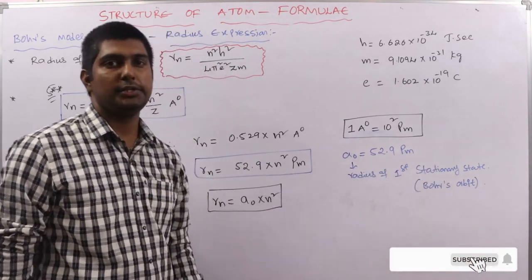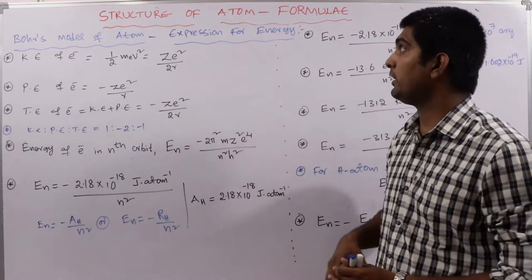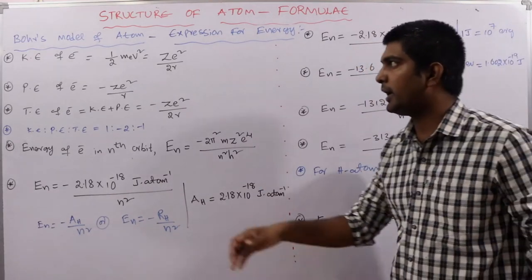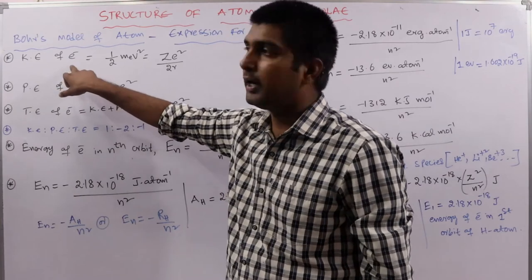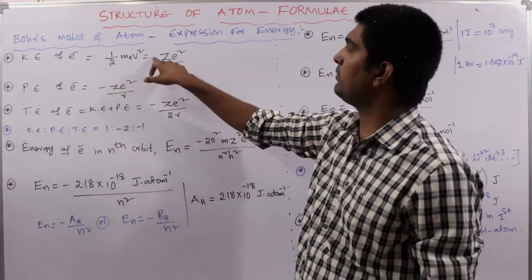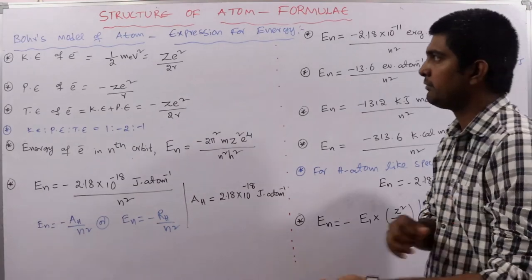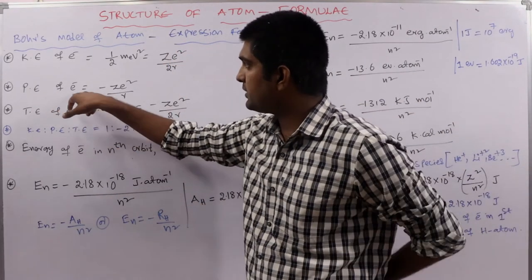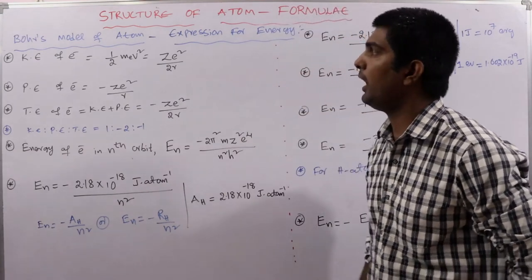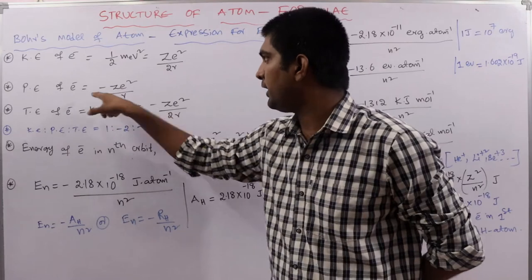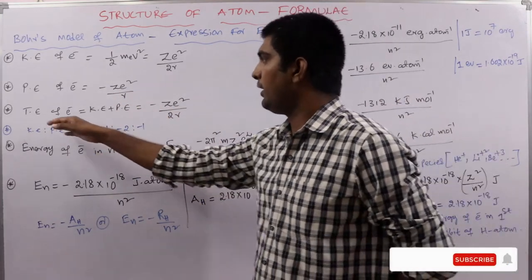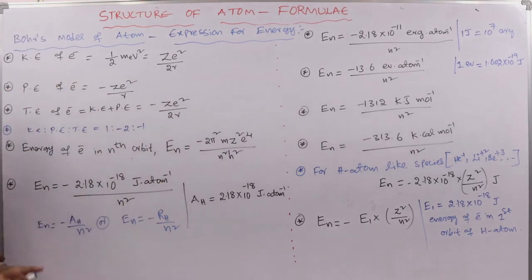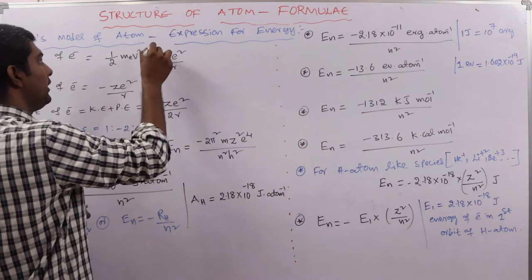For energy expressions in Bohr's model: kinetic energy of the electron = ½mev² = Ze²/2r; potential energy = −Ze²/r; total energy = KE + PE = −Ze²/2r. Be careful with the signs of these three expressions.